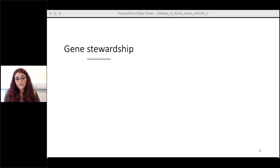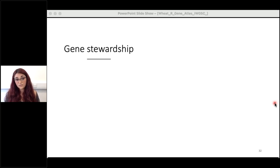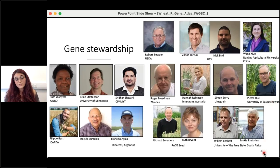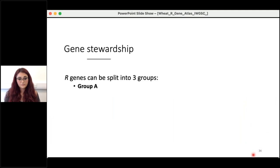Even with a coherent deployment strategy in one field, how genes are deployed in a wider landscape and virulence frequencies in wider pathogen populations must be considered. R gene stewardship can be defined as the careful and responsible management of R genes so that they remain effective for prolonged use. R genes can be split into three groups depending on their need for stewardship.